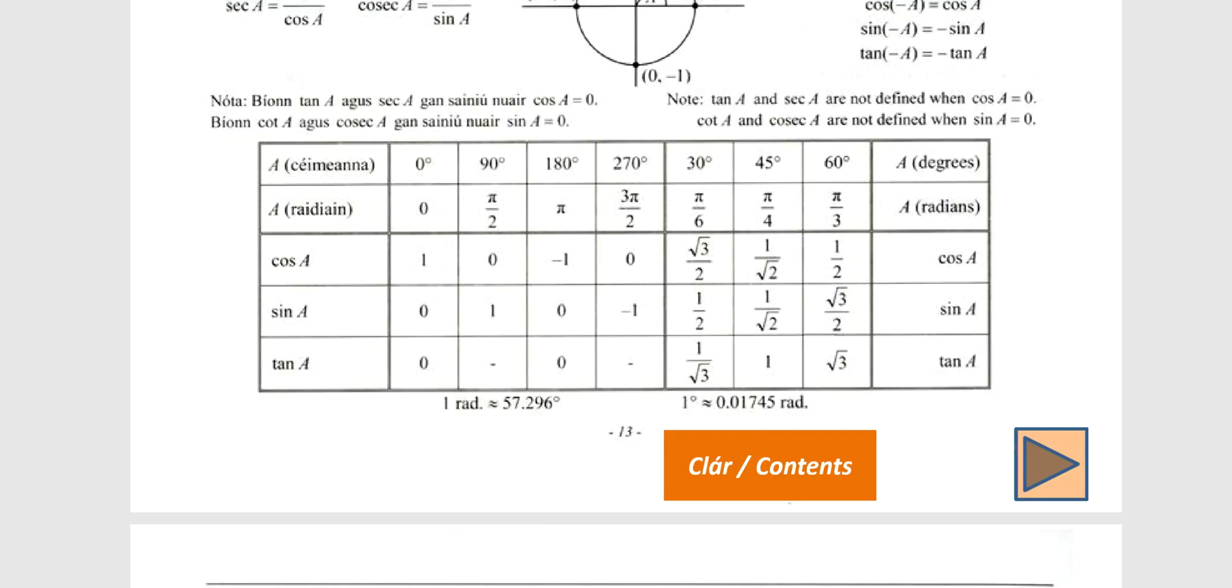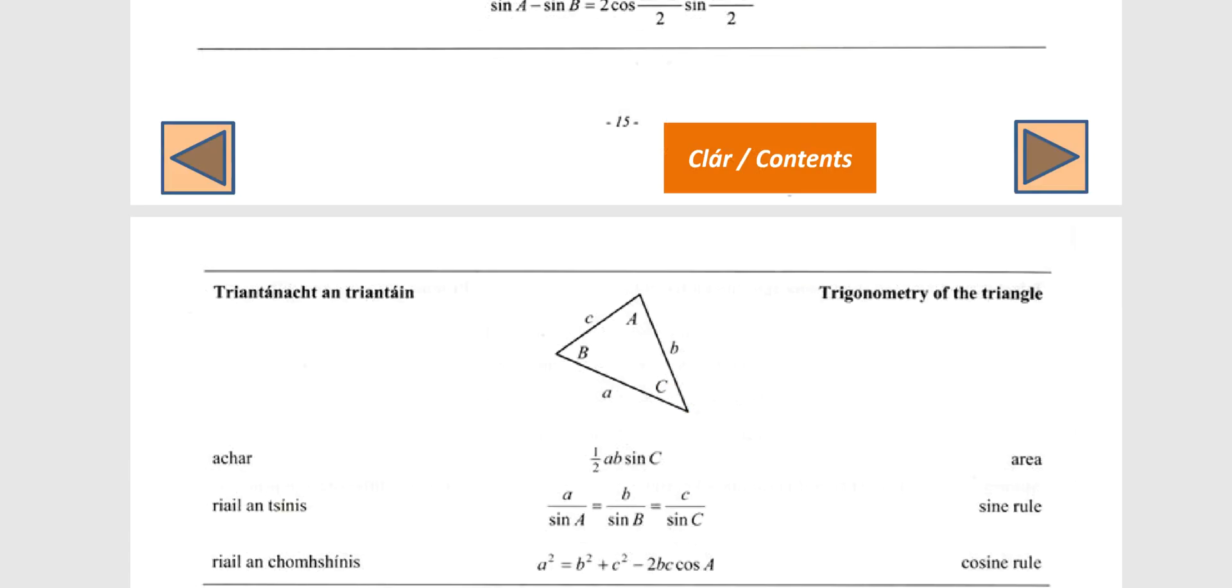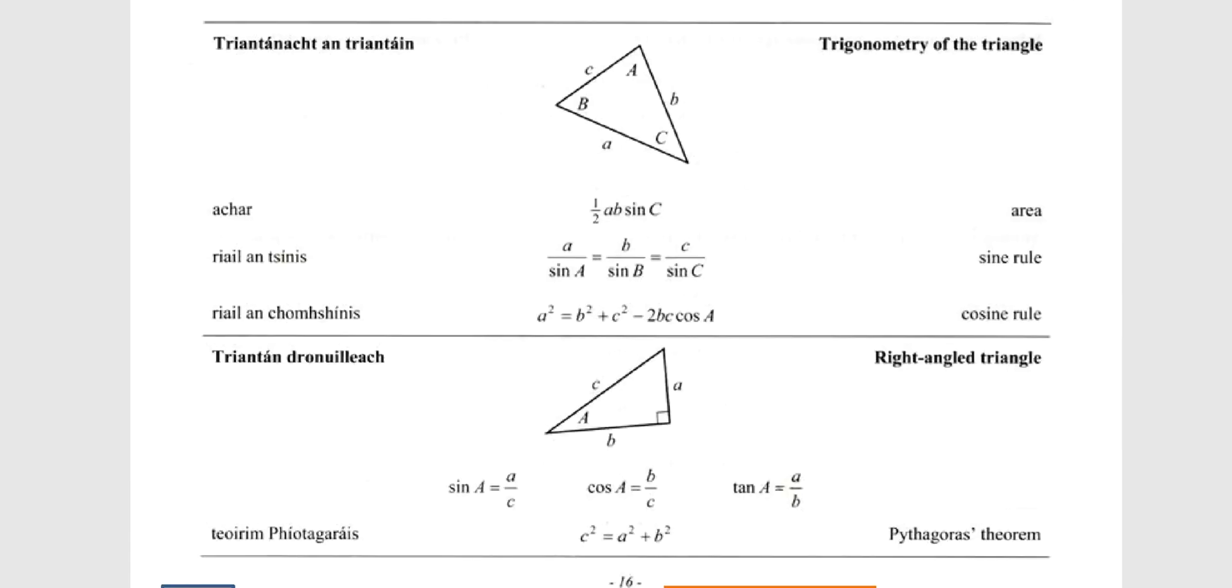So go to your log tables, go to the trigonometry section, and the top of the page here, it's page 16, is for non-right-angled triangles. Are we using the area formula? Well no, it doesn't reference area at all. So then we're left with sine rule or cosine rule.